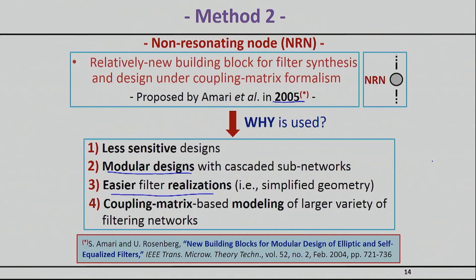The NRN concept also makes filter realizations easier — you don't have to overthink the design, and you can quickly come up with a reasonable approach. It also leads to less sensitive designs. When you try to make a very complicated transfer function with many transmission zeros, any small fabrication mistake results in large errors. With the non-resonating node concept, this type of problem goes away.